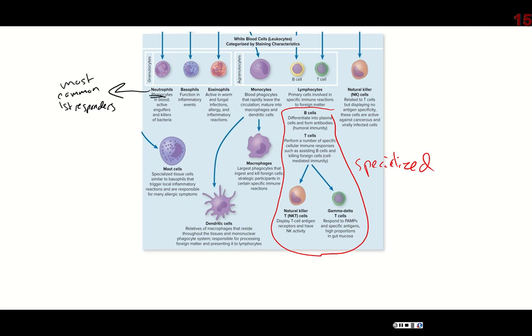Neutrophils are a type of phagocyte — they swallow up bacteria just like a little Pac-Man, and once it's inside, they destroy it into little particles that can be expelled because they're not harmful anymore. Notice they're color-coded: neutrophils look purple, basophils look blue, and eosinophils look red when stained under the microscope. They're clumped together as granulocytes because they have granules inside that pick up the color — those granules are various types of chemical messengers they can release later.